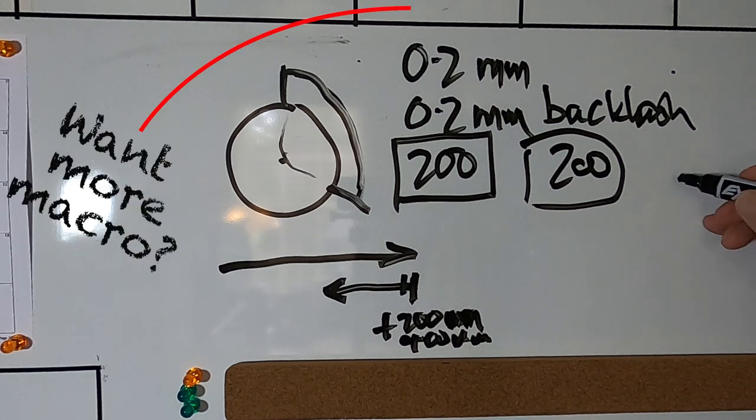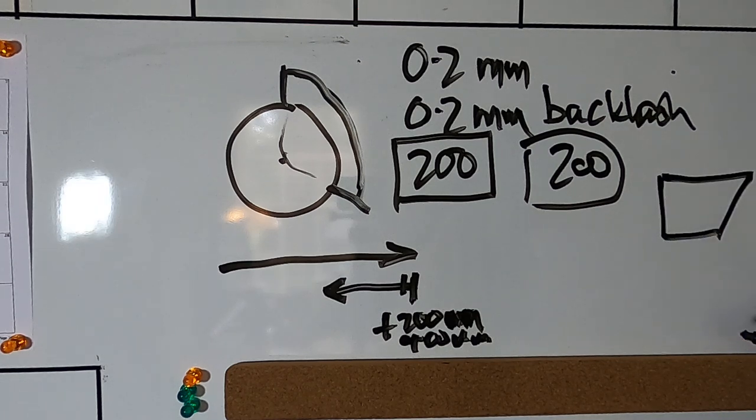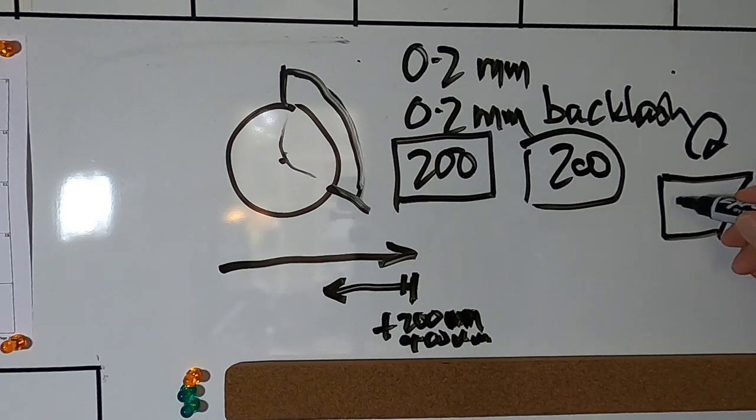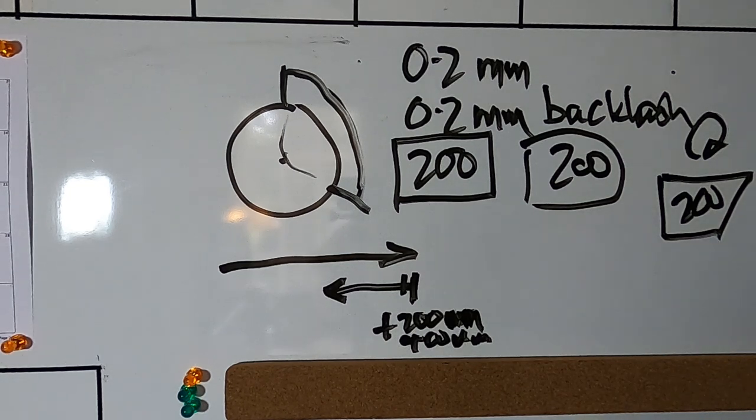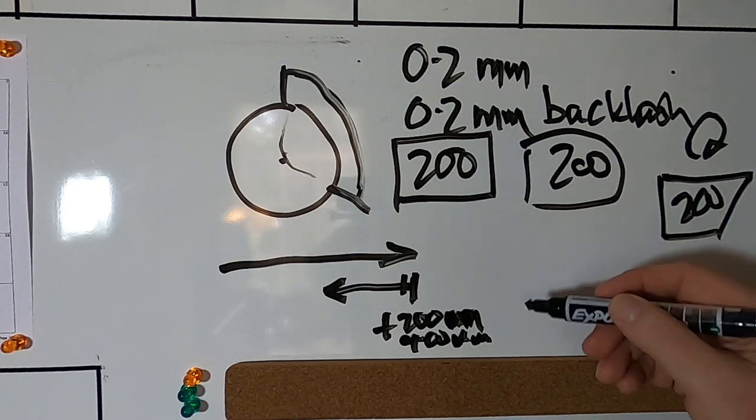It has a bucket of backlash that it refills, a bucket of backlash compensation, that it refills every time it changes direction. So when the motor changes direction, it puts in a fresh 200 microns of backlash, and until it has moved in this new direction by that amount, nothing happens. The carriage doesn't move. So only when the backlash is taken up does the carriage move.